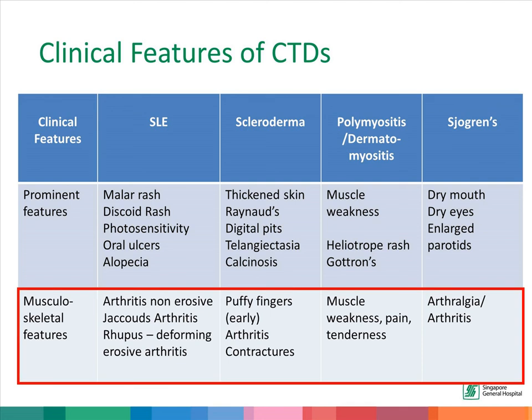As for the musculoskeletal features, in SLE we can see arthritis, which is usually not deforming. In scleroderma, we see puffy fingers. In myositis, the main musculoskeletal feature is muscle weakness. In Sjogren's, we can also see arthritis or just arthralgia.